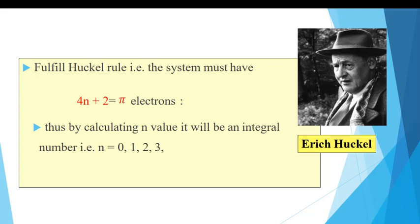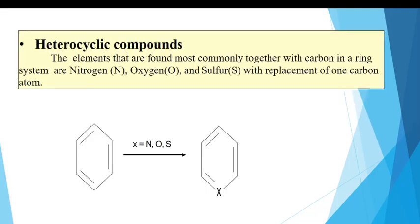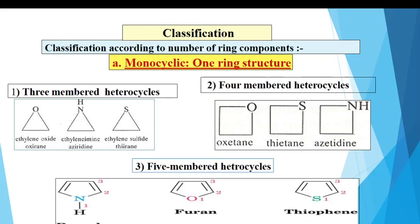This formula was first developed by Erich Hückel. Heterocyclic compounds contain elements found most commonly together with carbon in a ring system — nitrogen, oxygen, or sulfur — with replacement of one carbon atom. So in this structure, one carbon atom is replaced with a heteroatom, most specifically nitrogen, oxygen, or sulfur.